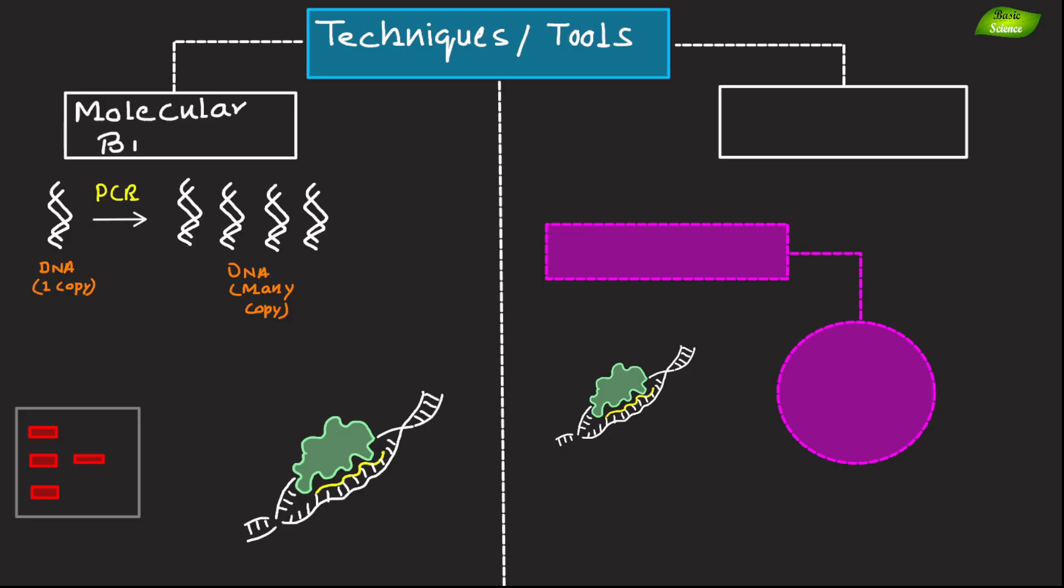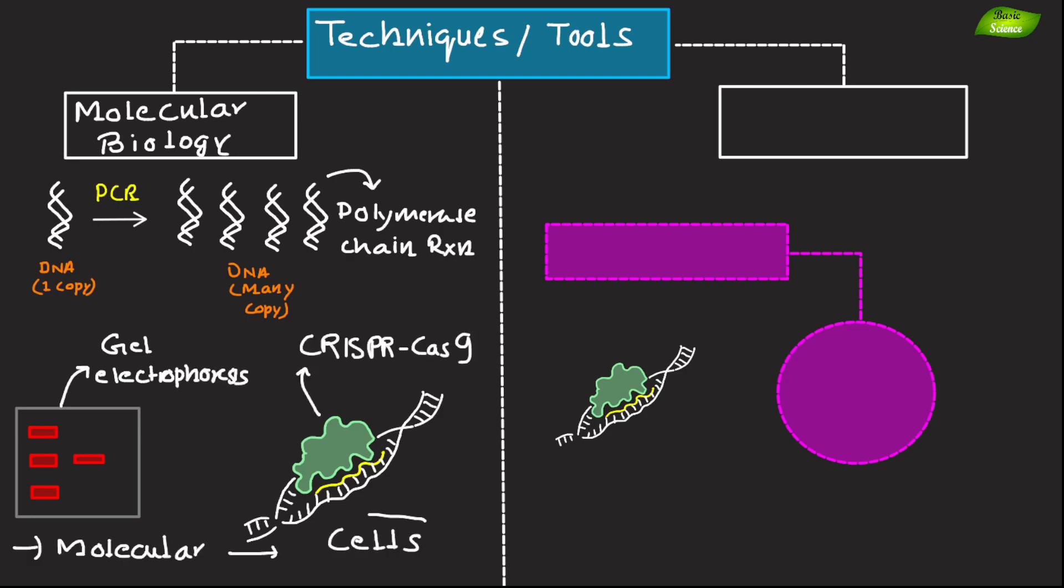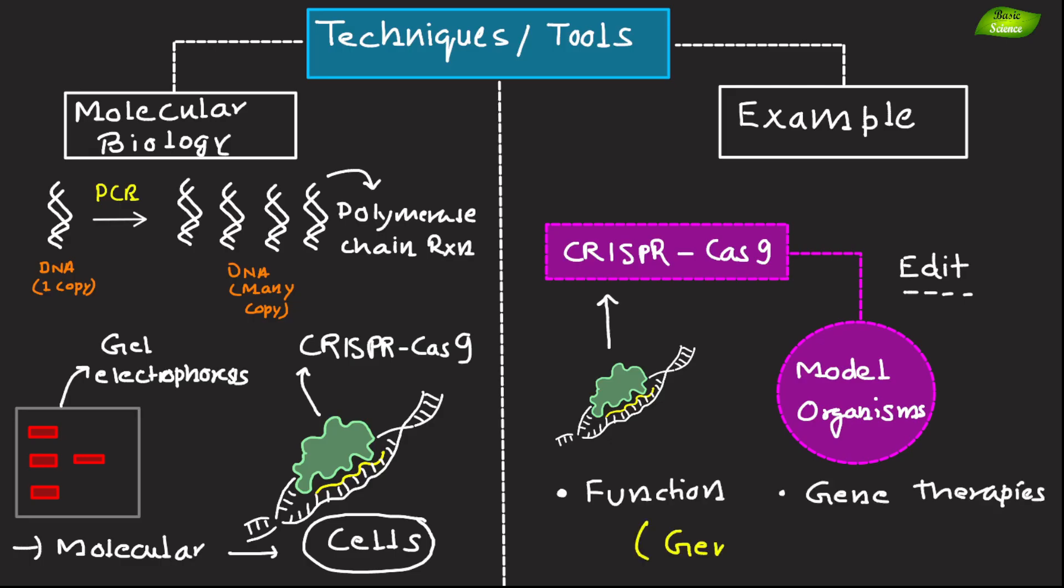Molecular biology often uses techniques like PCR, which is polymerase chain reaction, gel electrophoresis, CRISPR-Cas9 gene editing, and western blotting to study and manipulate molecular components of cells. An example includes using CRISPR-Cas9 to edit genes in model organisms to study their function and develop gene therapies for genetic disorders.